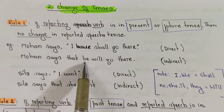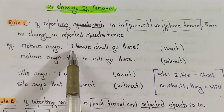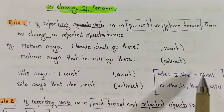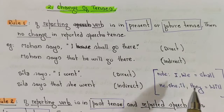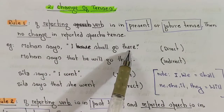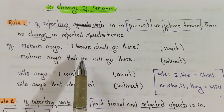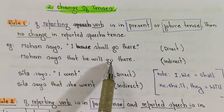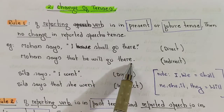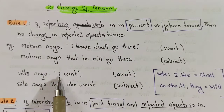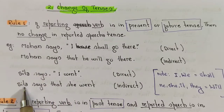We always use 'shall' with 'I' and 'we', and 'will' with 'he', 'she', 'it', 'they'. So 'I shall go there' changes into 'he will go there.' Next example: 'Sita says I went' — in indirect speech it becomes 'Sita says that she went.'